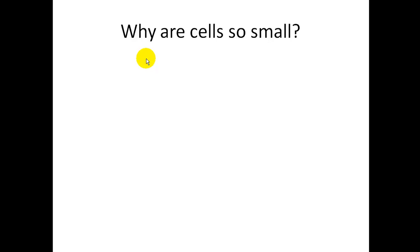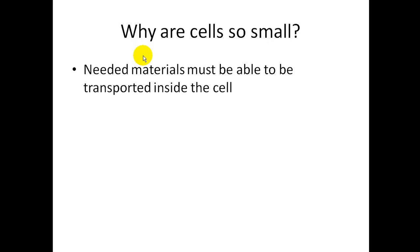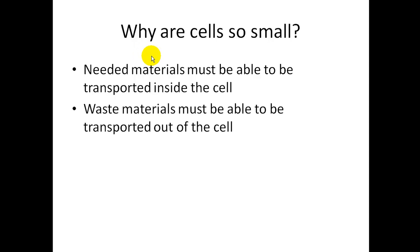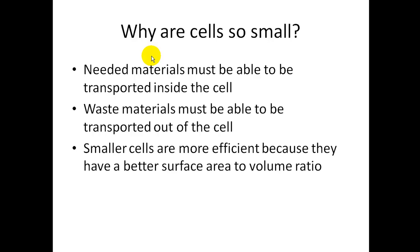The next thing we're going to talk about are the size of cells. Cells are very small. We saw that on our diagram last podcast with the microscope. Cells have to be small. There's materials that the cell needs, and the cell needs to get that material in an efficient manner. So these needed materials must be able to be transported inside the cell quickly. Also, on the opposite side of that, there's waste that the cell has. Just like our body, there's waste, you have to get rid of it. Waste materials need to be able to get out of the cell in an efficient manner. So the smaller the cell, the better.